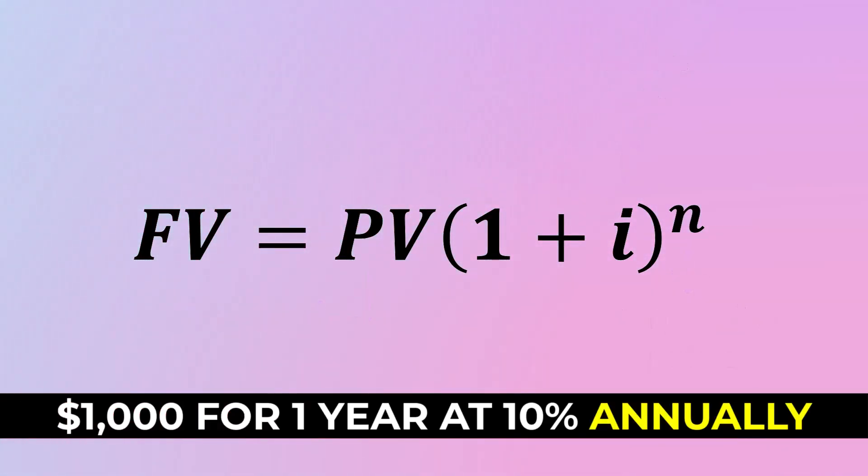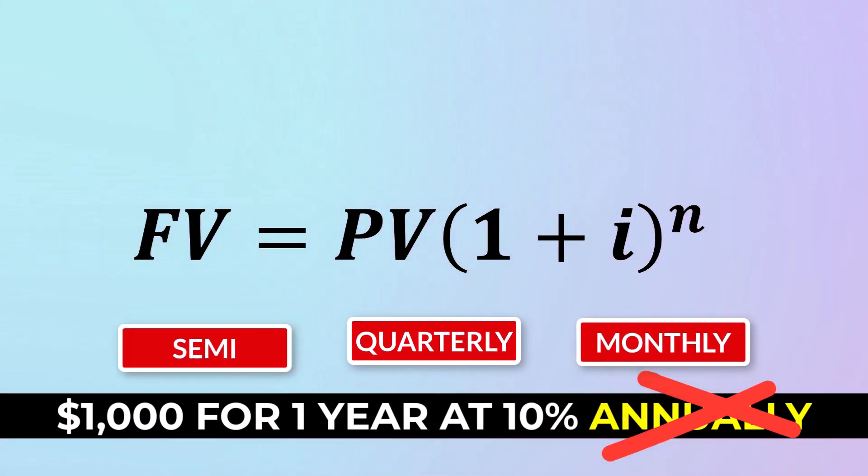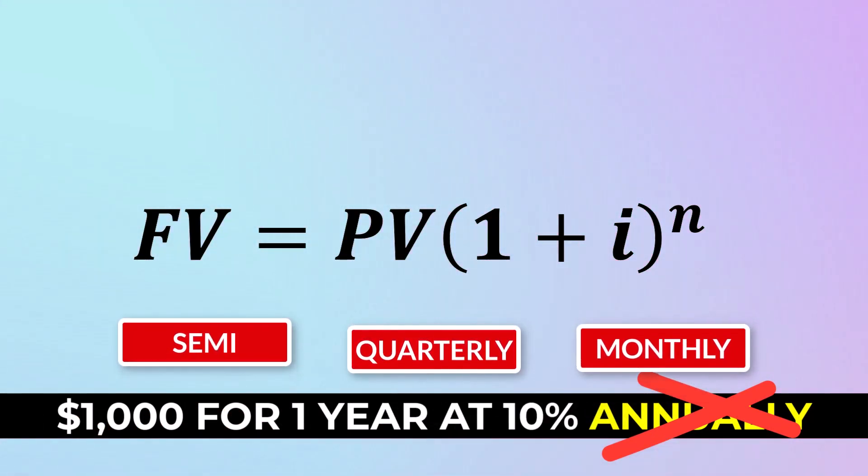Now in our scenario, the interest was being compounded annually, so we left the annual interest rate I as it was. But if the interest is compounded more frequently, such as semi-annually, quarterly, or monthly, we need to adjust the interest rate accordingly.